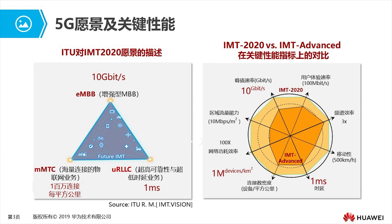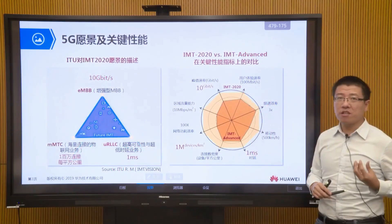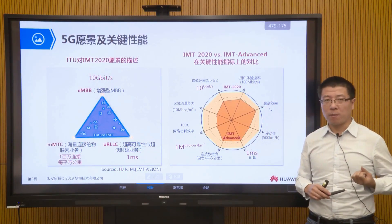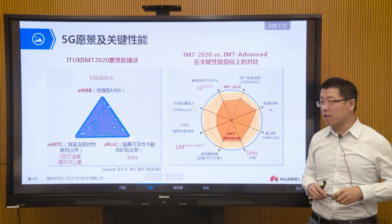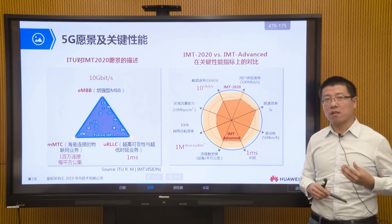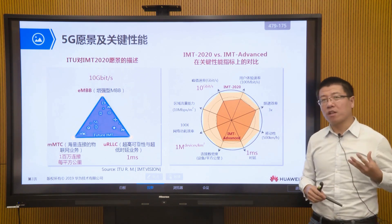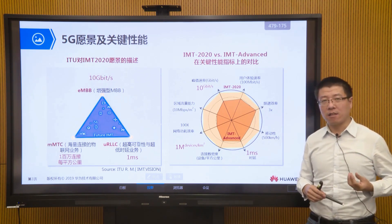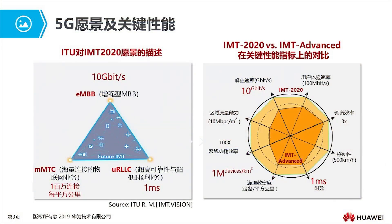In the 5G era we need to support 10 Gbps of regional traffic per square meter, placing higher demands on network capacity. From these KPI comparisons between 4G and 5G, we see 5G has significant improvements across all key performance areas. Achieving such performance improvements requires new network structures and new key technologies as the foundation.